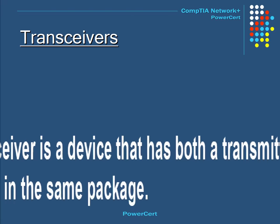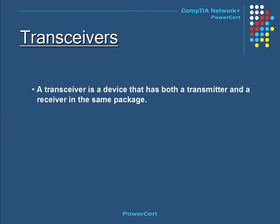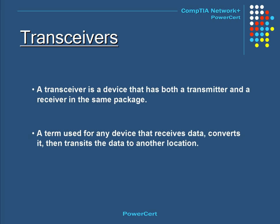A transceiver is a device that has both a transmitter and a receiver in the same package. The term applies to wireless communication devices like cell phones and two-way radios. It is basically a term used for any device that receives data, converts it, and then transmits the data to another location.